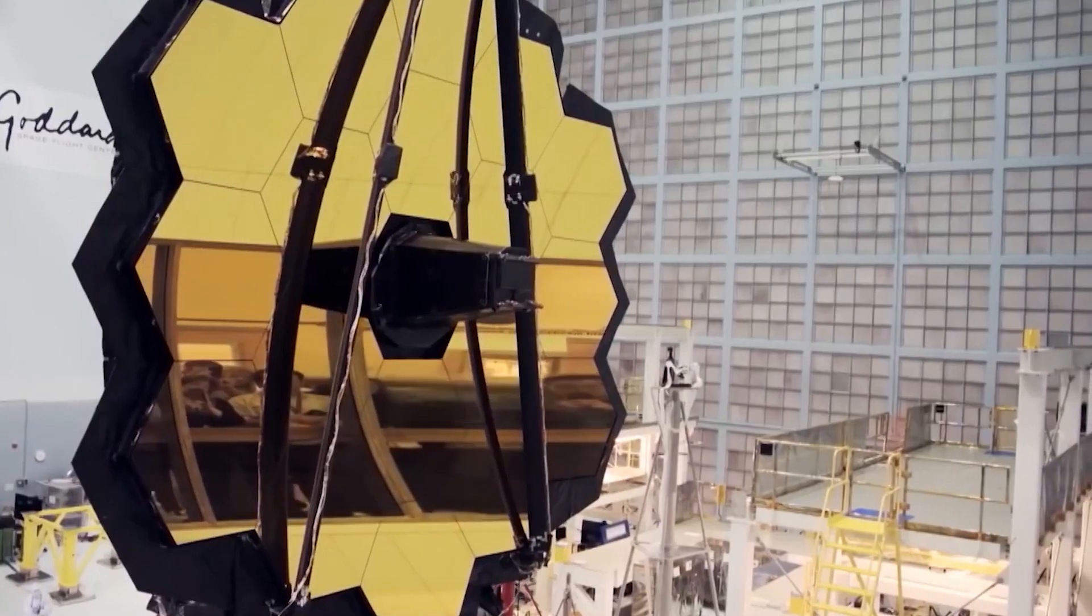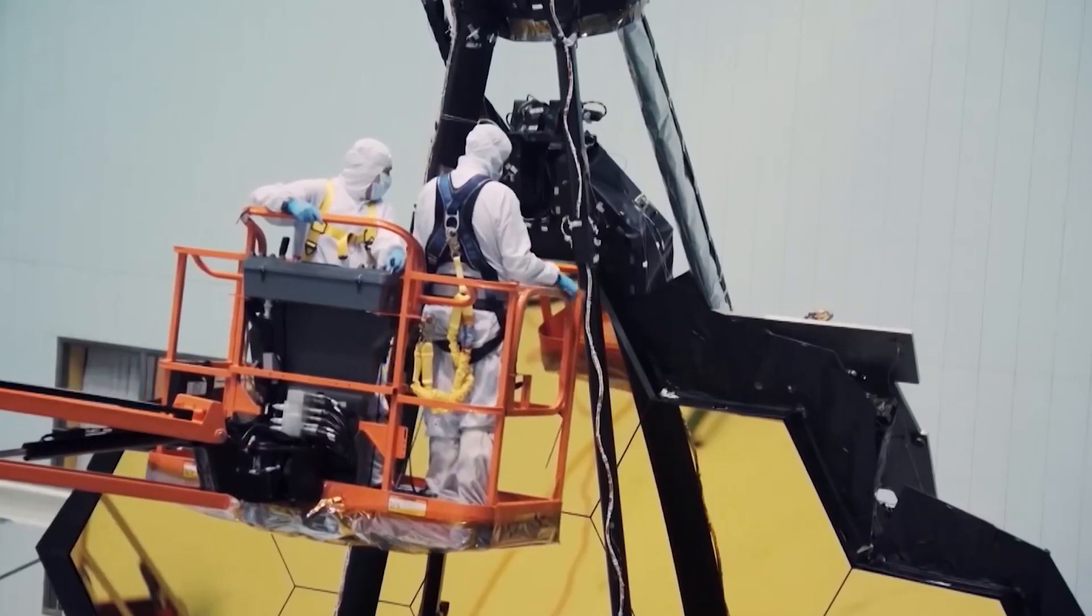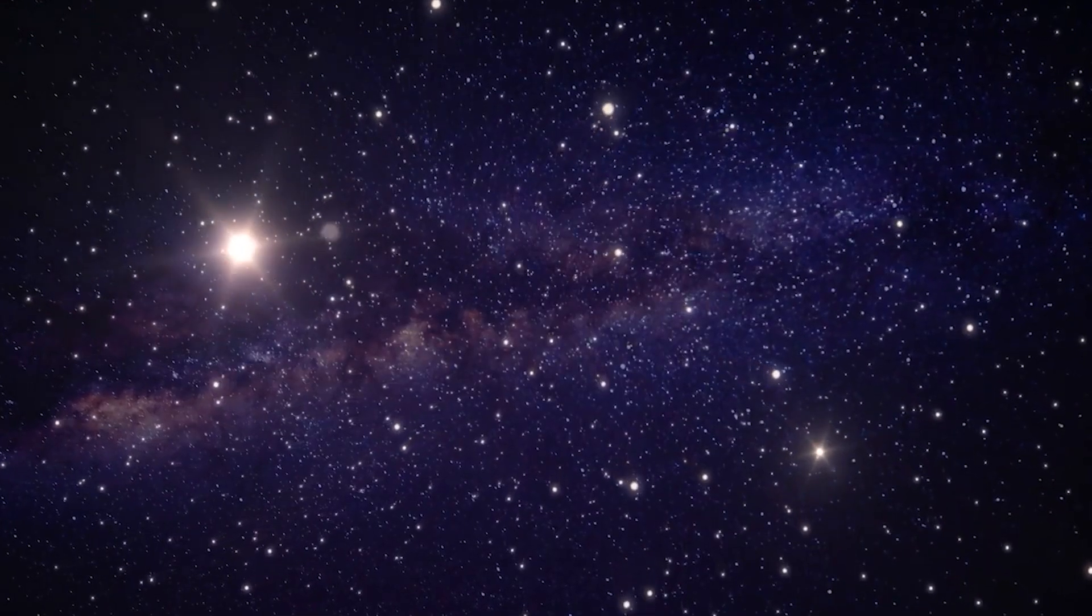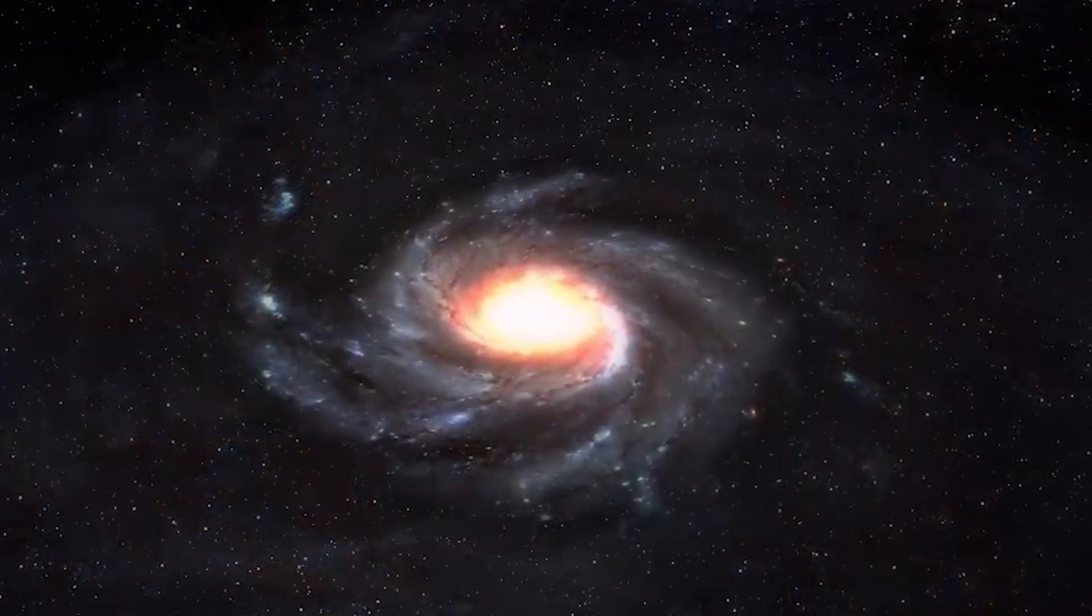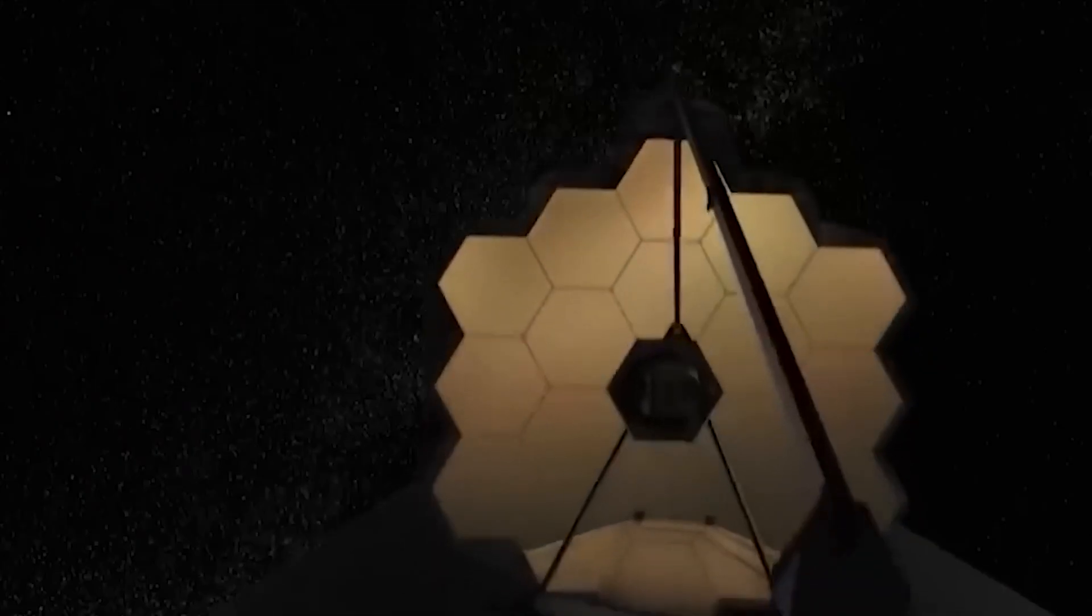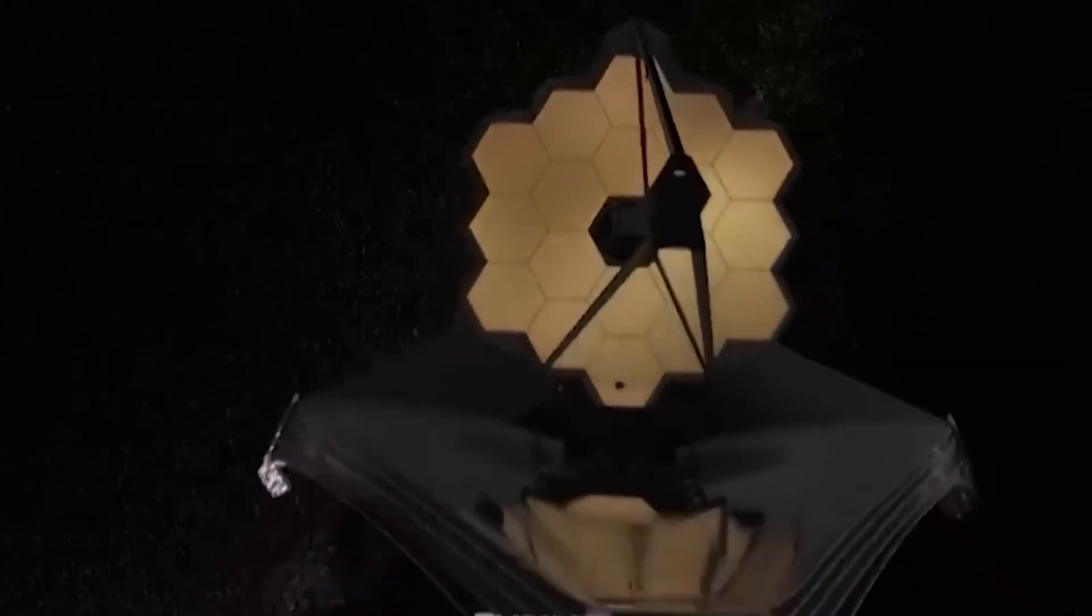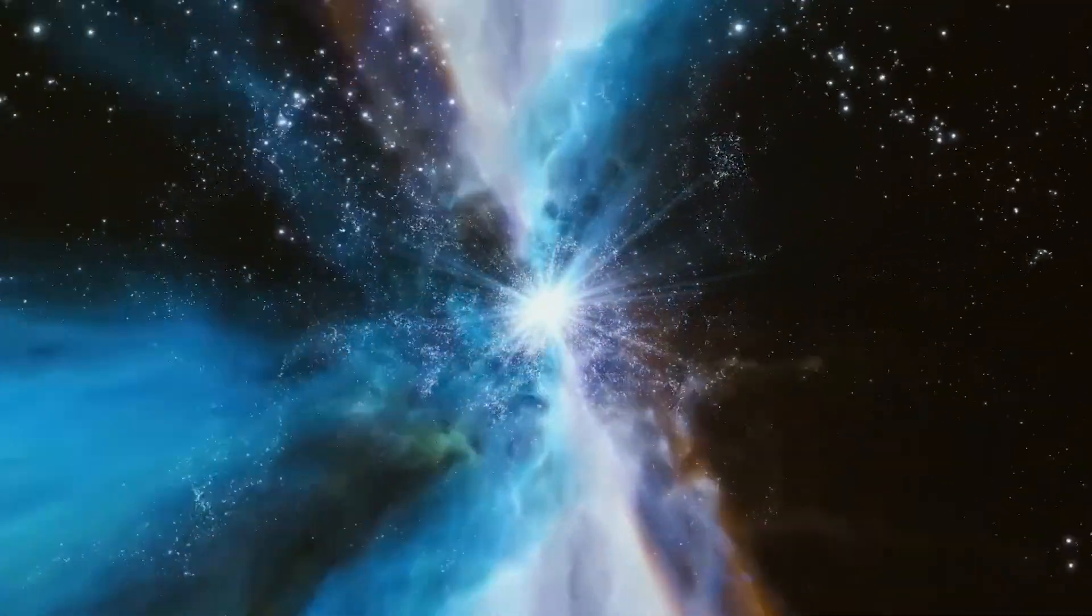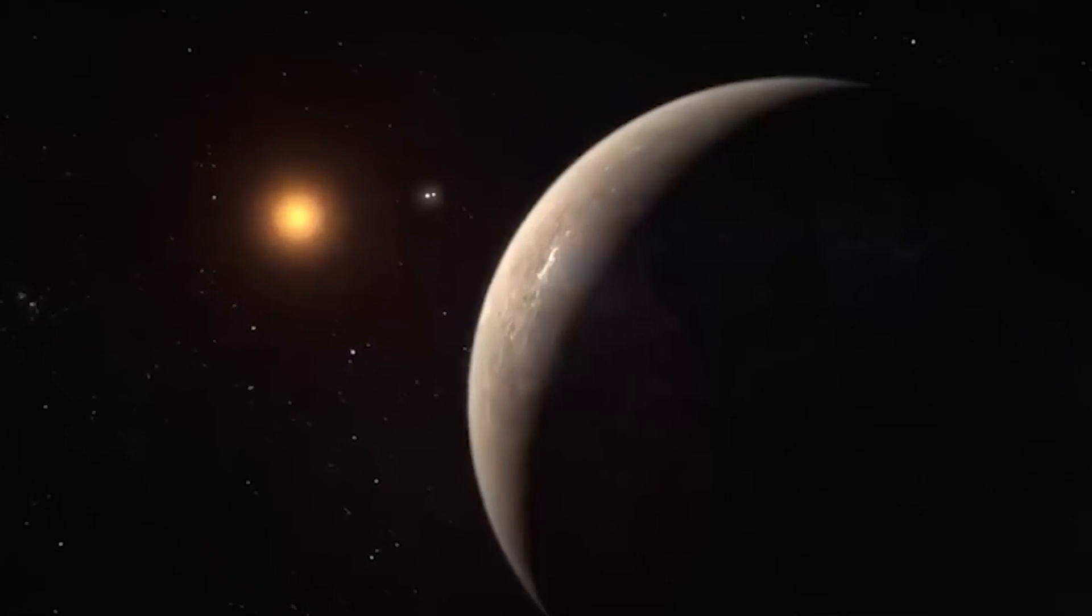The James Webb Space Telescope is one of the most ambitious and complex space observatories ever built. Its primary mission is to study the early universe, the formation of galaxies, and the birth of stars and planets. However, the JWST is also expected to make significant contributions to the search for exoplanets and the characterization of their atmospheres, including Proxima b, the closest potentially habitable exoplanet to Earth.